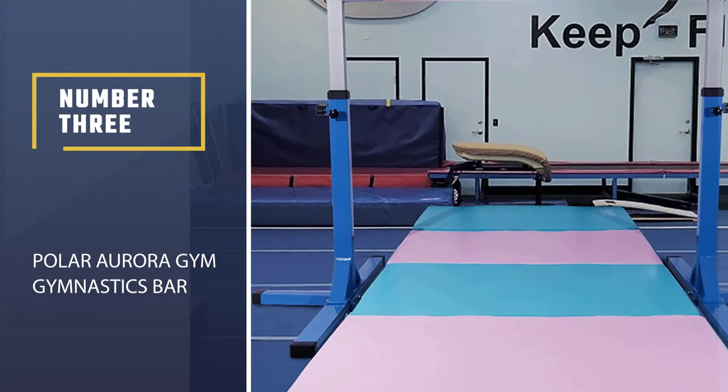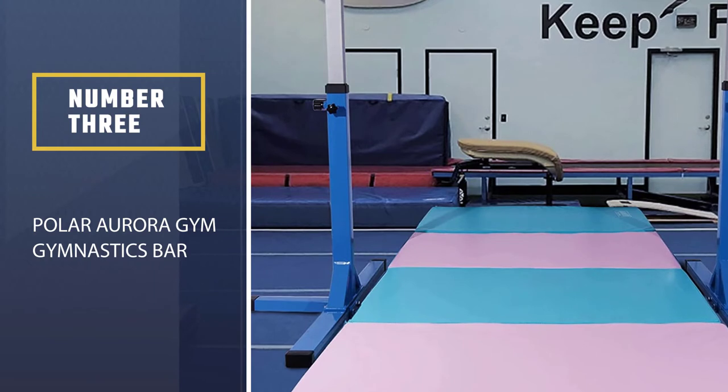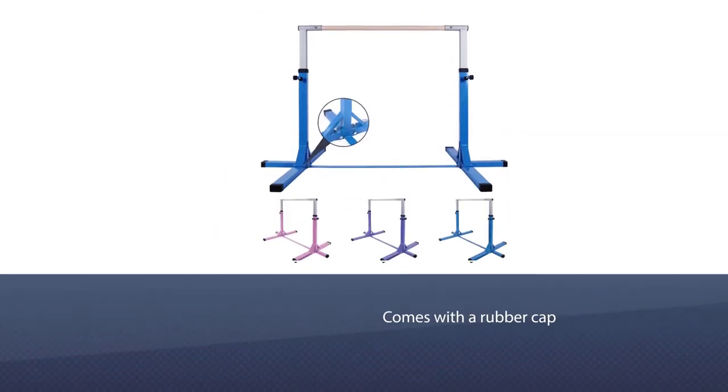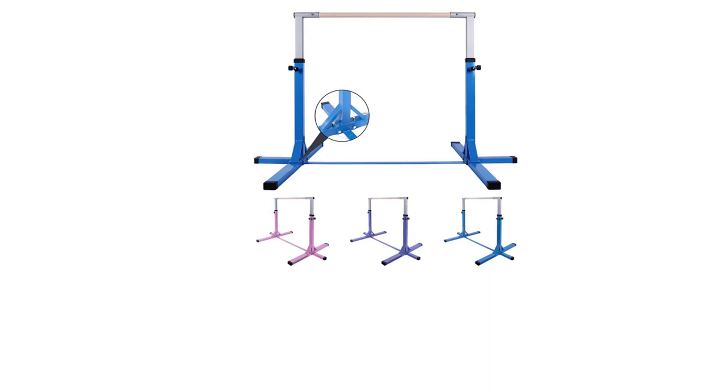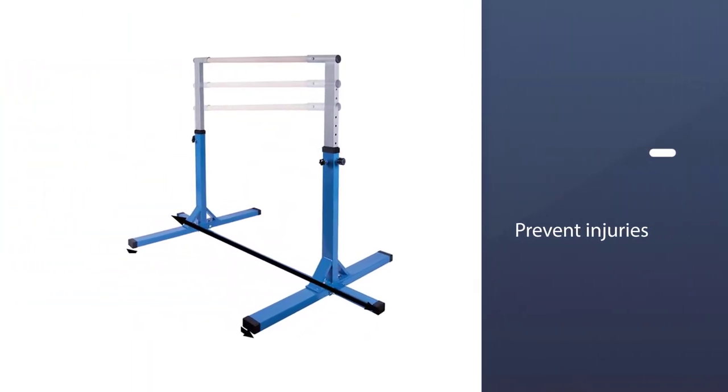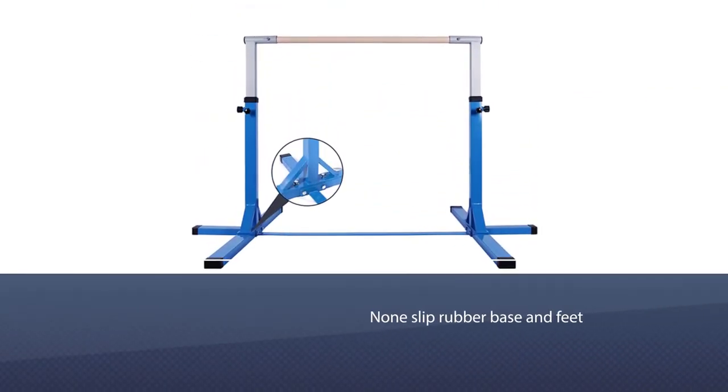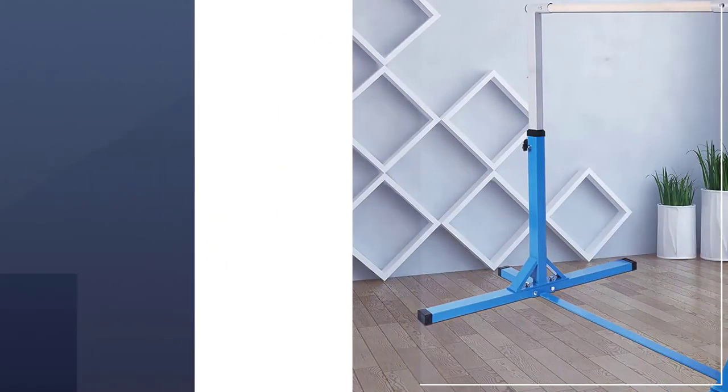Number three: Polar Aurora Gym Gymnastics Bar. Polar Aurora gymnastics kip bar comes with a rubber cap to prevent injuries and keep the bars in their place. This non-slip rubber base and feet are well-recommended technology. This bar is made of 100% steel that increases firmness. Now no extra padding is required because this gymnastic bar is constructed with a flat and flush design.